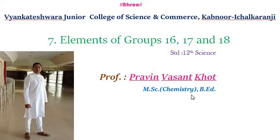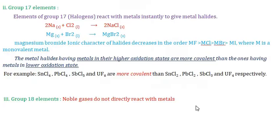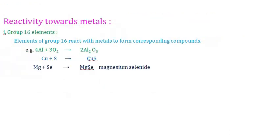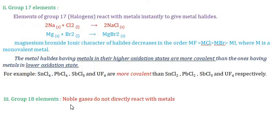Elements of Group 16, 17, and 18 show different reactivity towards metals. Group 16 elements react with metals to form corresponding compounds. For example, aluminium reacts with oxygen to form aluminium oxide, copper reacts with sulfur to form copper sulfide, and magnesium reacts with selenium to form magnesium selenide.